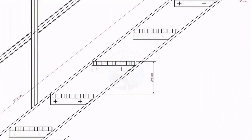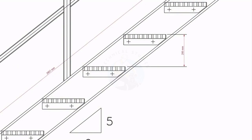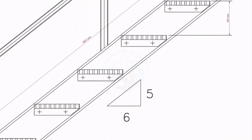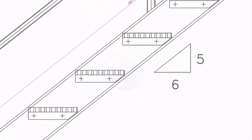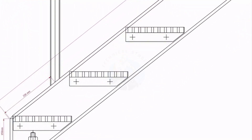Let us have a look at the drawing in its 3D model. The slope ratio of the staircase is 5 to 6.